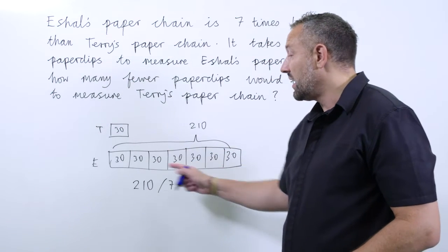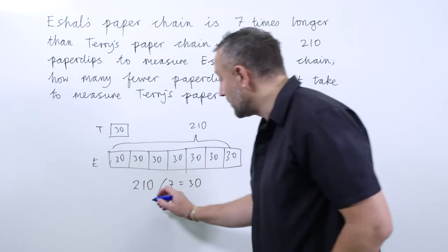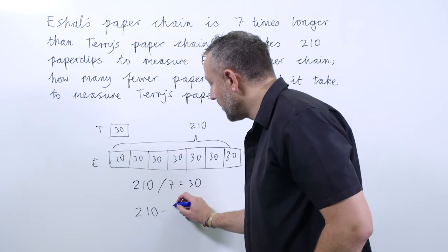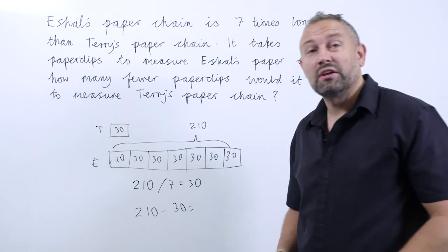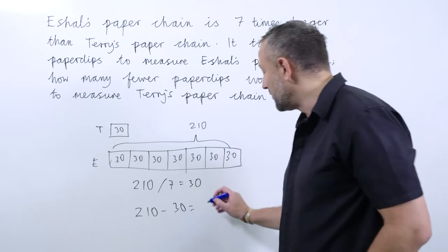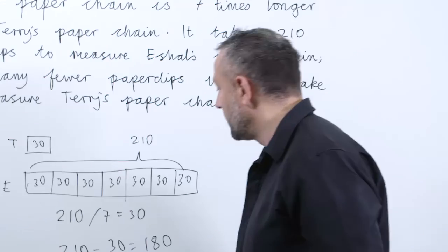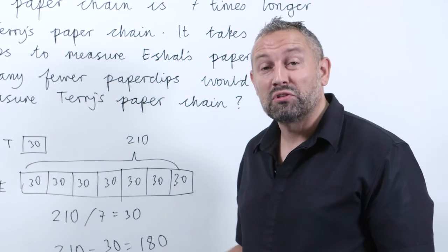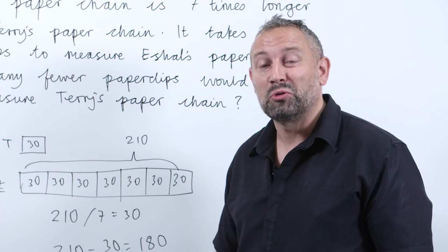So if Terry's is 30 and Eichel's is 210, we need to look at 210 minus 30, which equals 180. And that's how we use the bar model to solve multi-step multiplication problems.